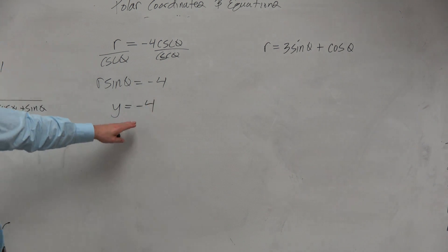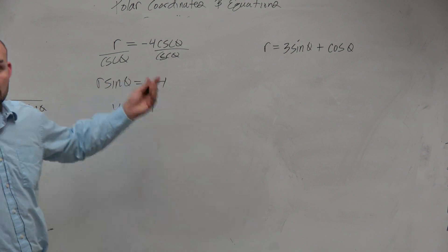So y equals negative 4. Do we know what that creates? A horizontal line at negative 4. Right? There we go. Done.